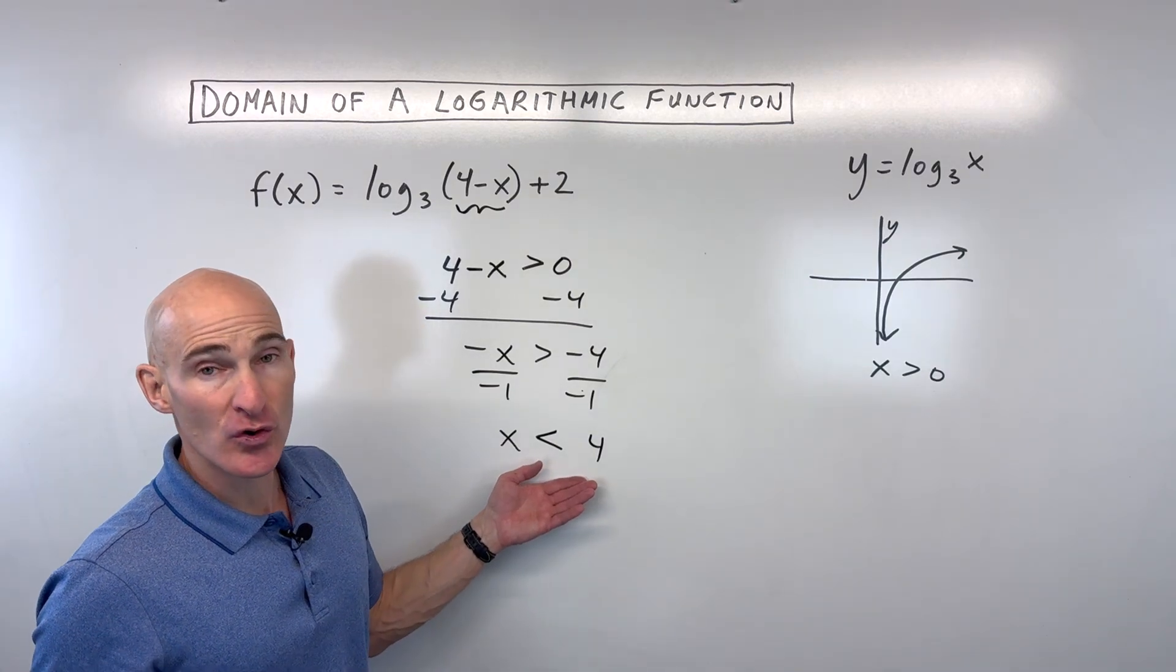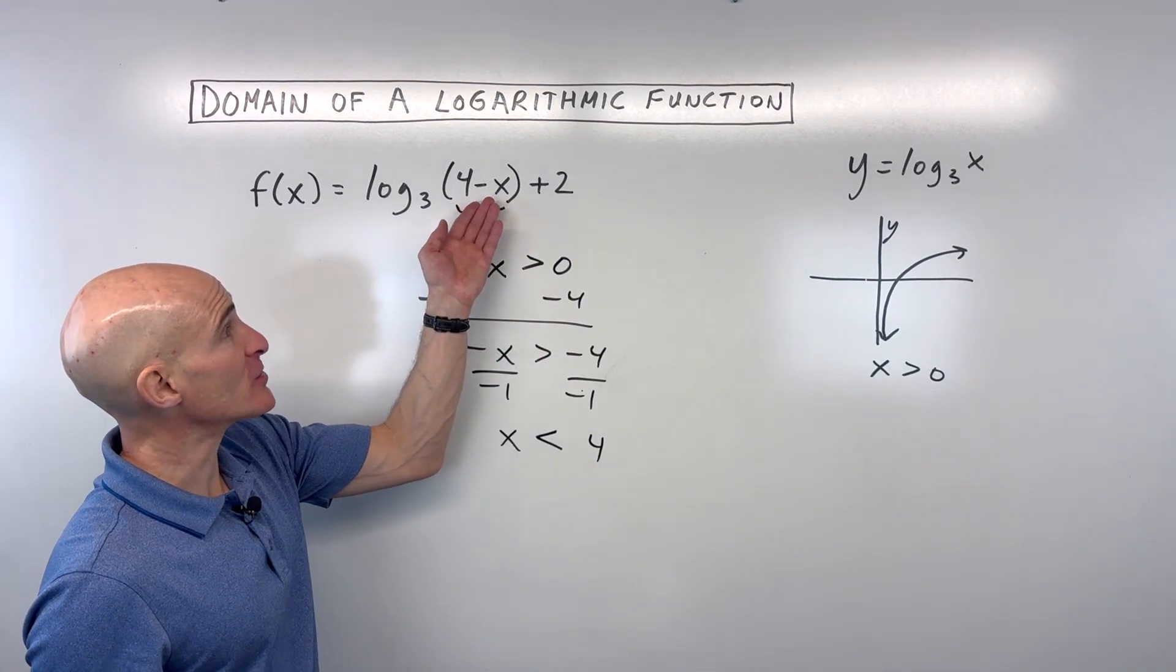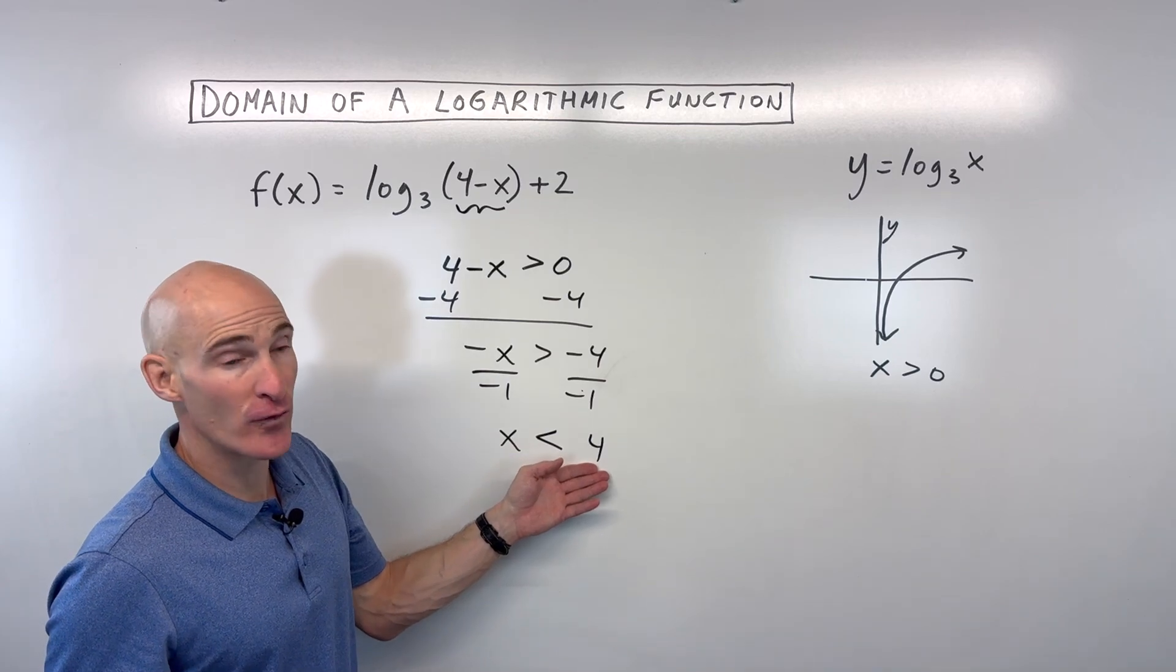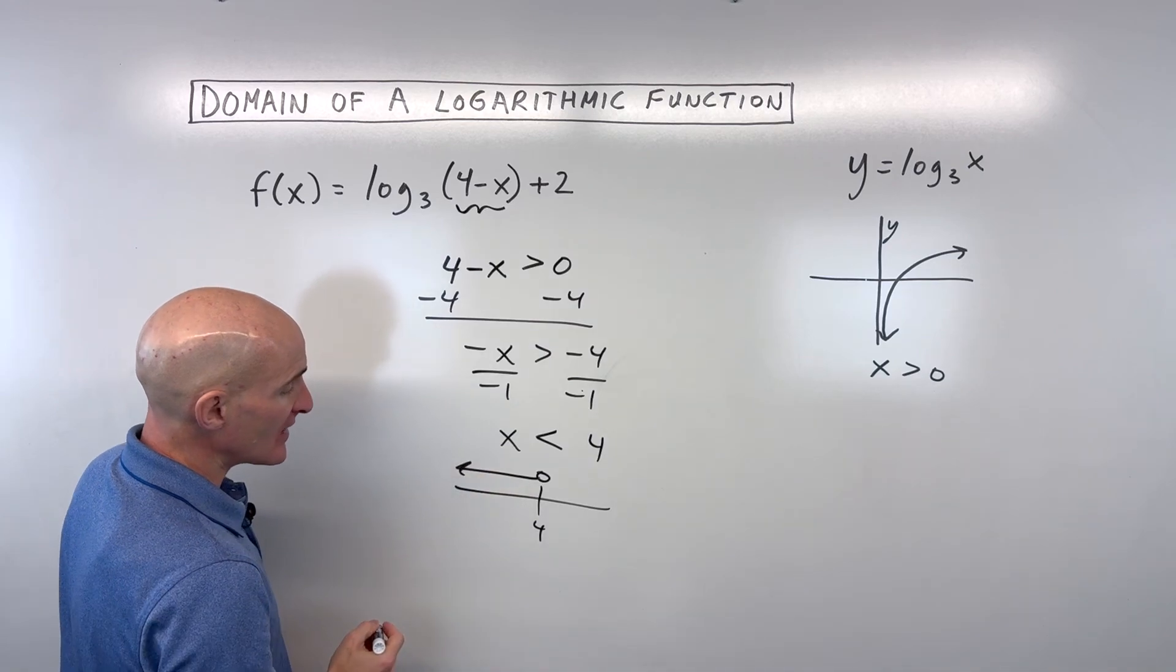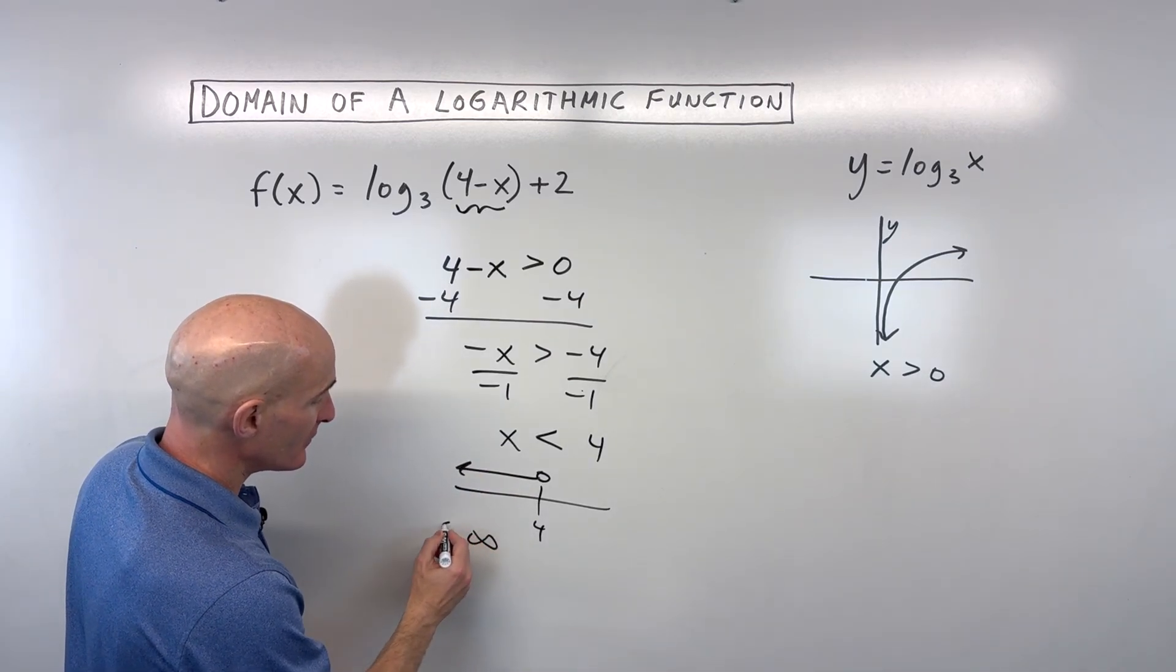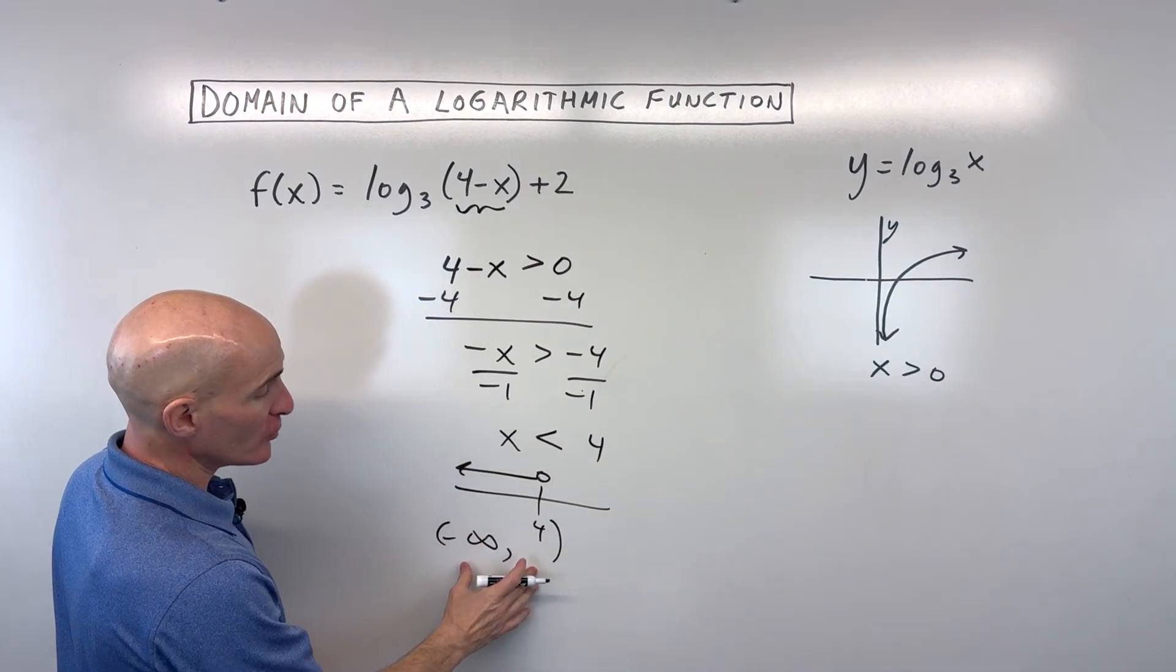And so we can see that our domain, or our possible inputs here for x, have to be less than 4. You could also write this in interval notation. If you're using that in your class, it would be from negative infinity to 4, not including 4.